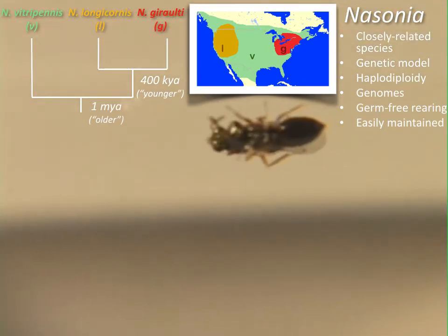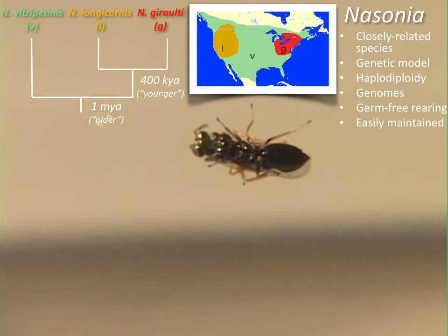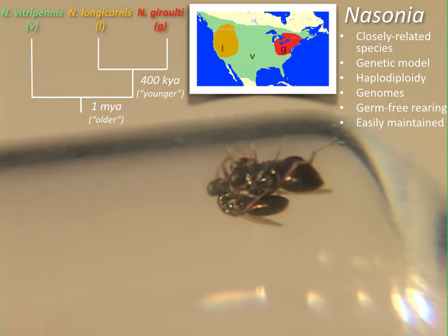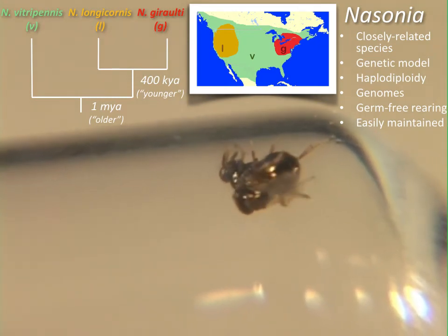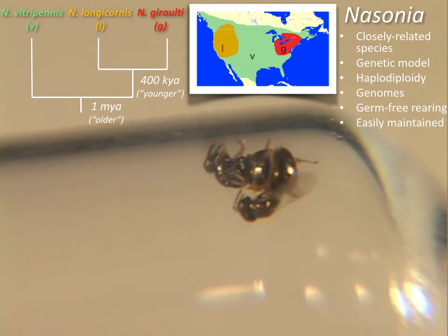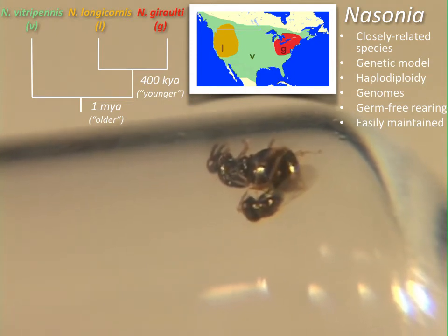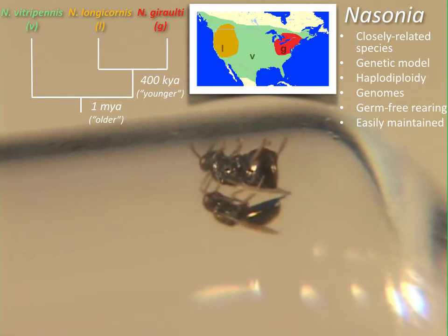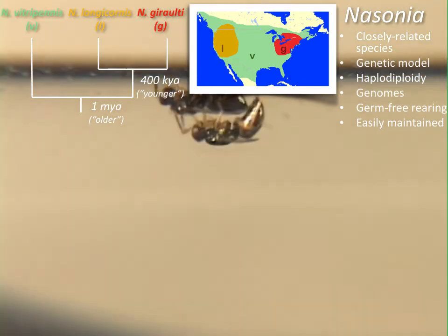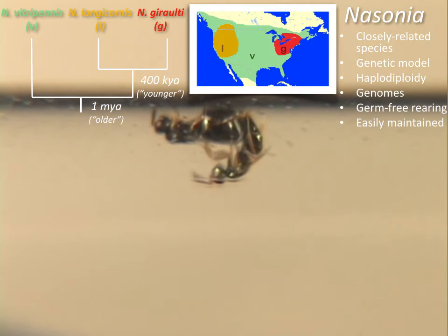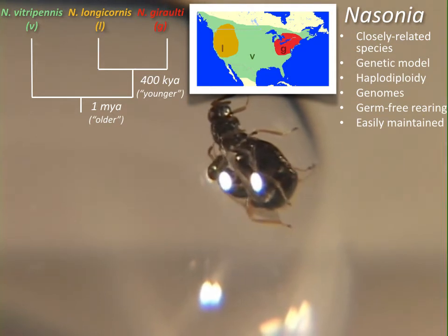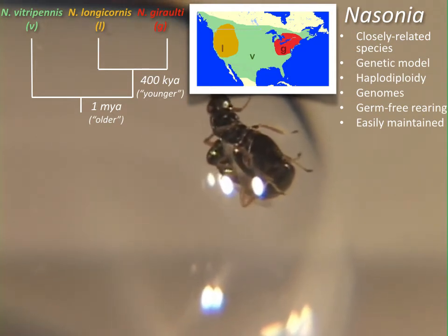The male does a courtship display where he nods his head, spits pheromones at the female's antenna, and sweeps his antenna to stimulate receptivity. Once she's receptive, her antenna goes down and her abdomen opens up. The male backs up for insemination, which takes just a couple of seconds. There's a post-copulatory display where the male gets back on top, does more pheromone spitting and head nods, and then the mating event is done. The female will never mate again after this point.